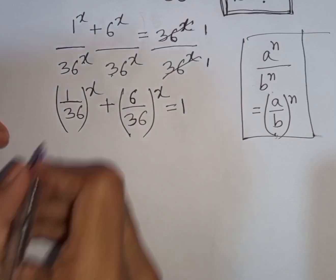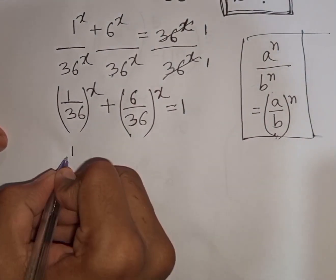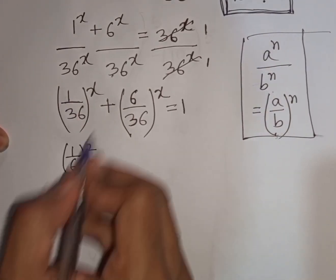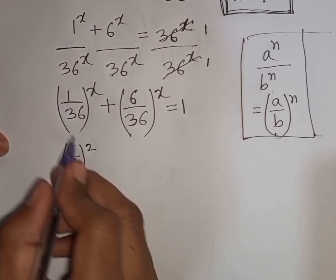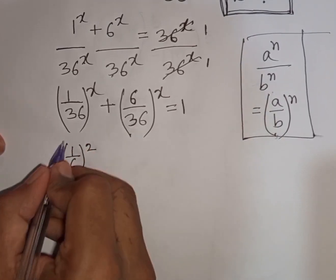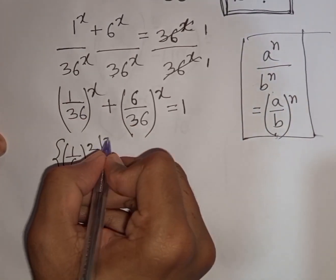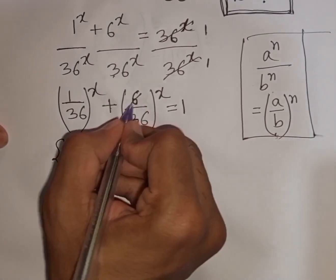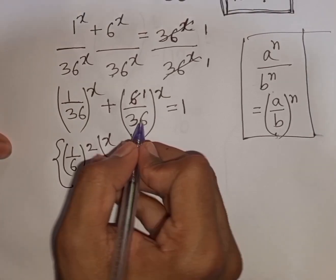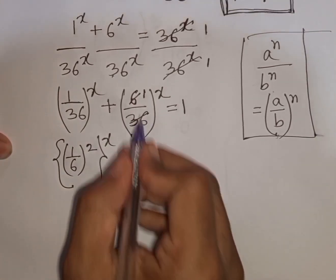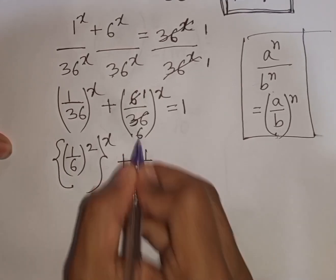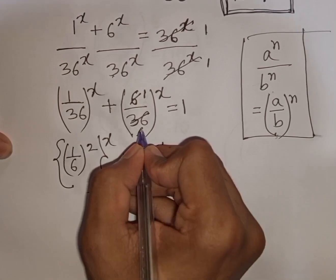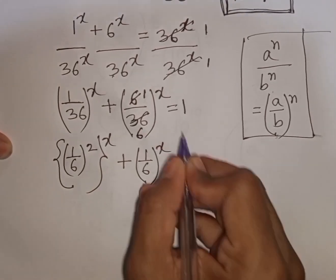Now 1/36 can be written as (1/6)^2, since 1² = 1 and 6² = 36. So the first bracket can be written as the second bracket. And 6/36 means it will be 1/6. Also 36/6 means it will be 6. So we have (1/6)^x = 1.